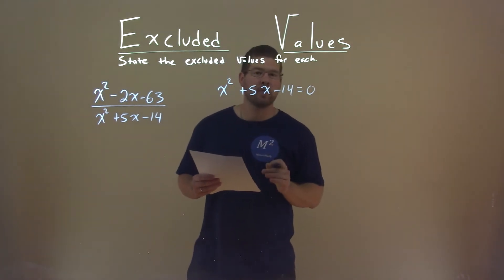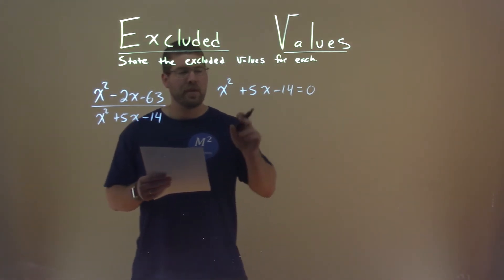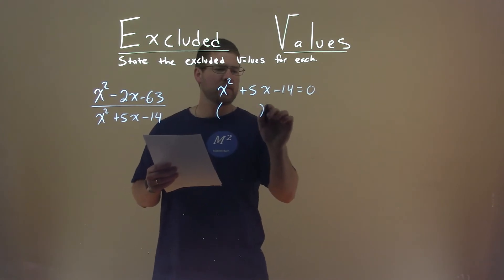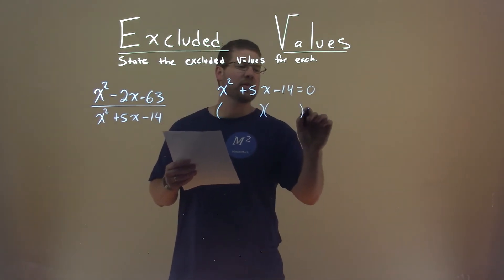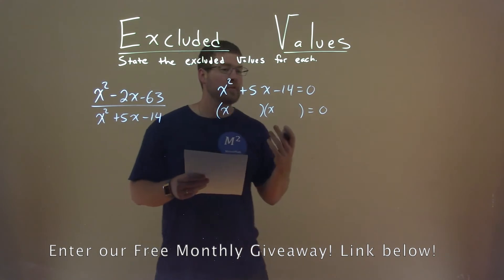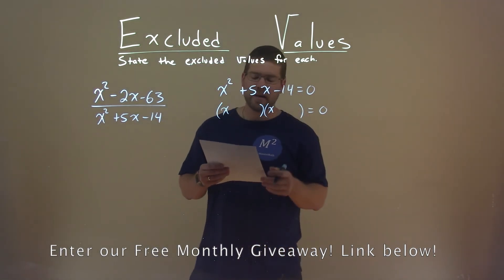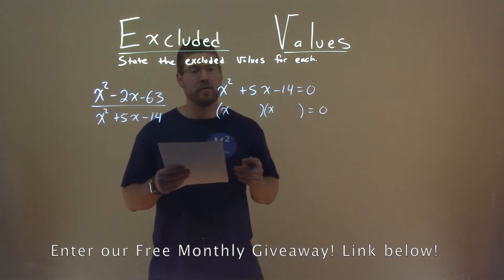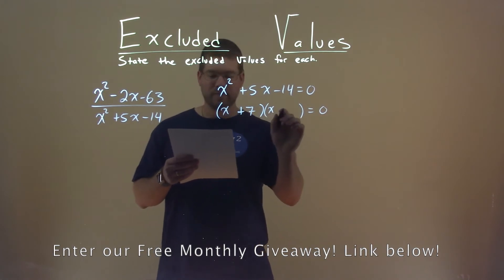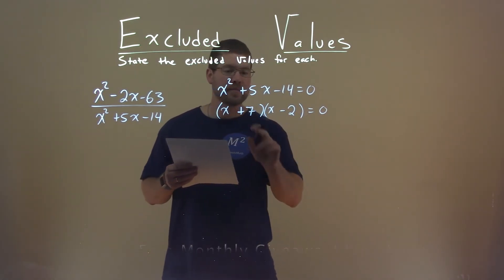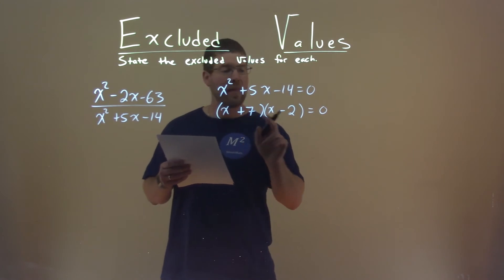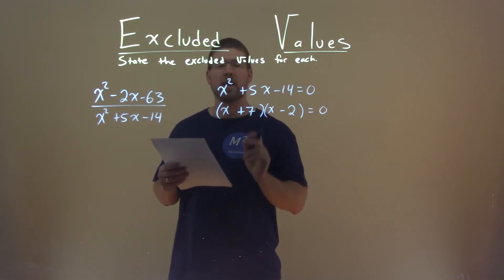Now we're going to solve for x. This looks like it can factor fairly easily. We have an x here and an x here. What two numbers multiply to be negative 14 but add to be positive 5? That's 7 and negative 2: 7 times negative 2 is negative 14, and 7 plus negative 2 gives us positive 5.